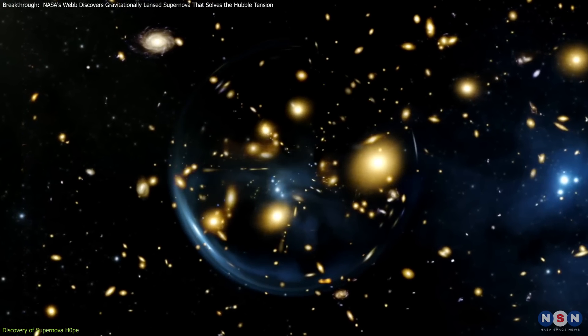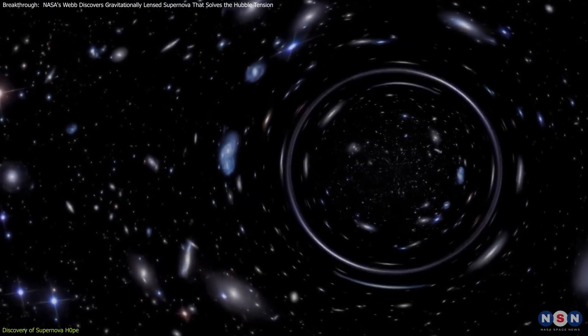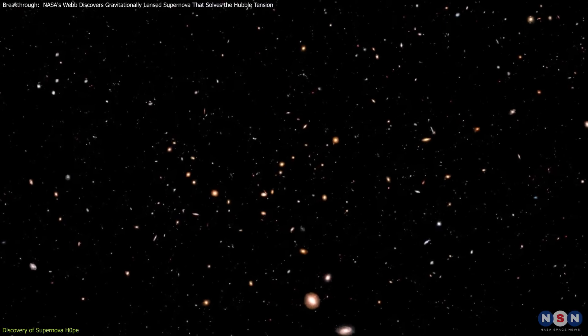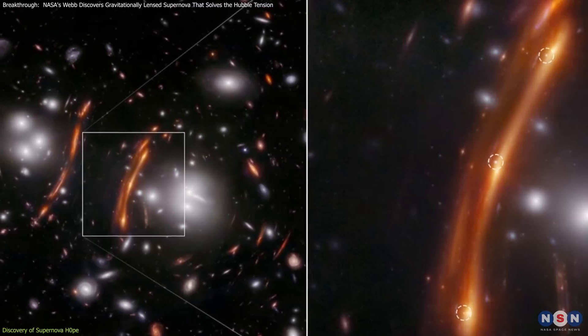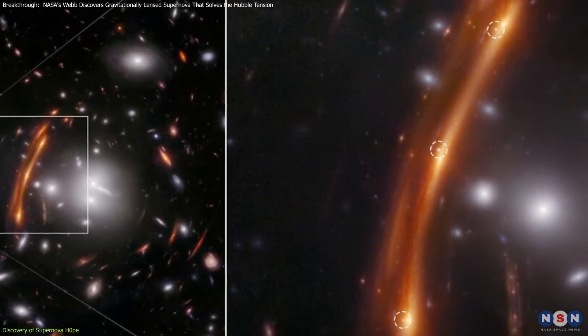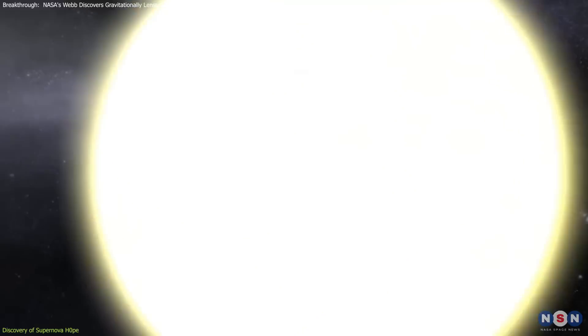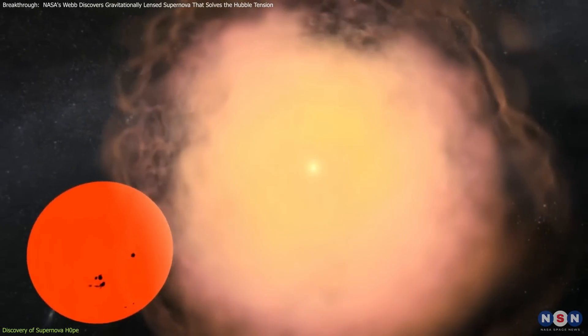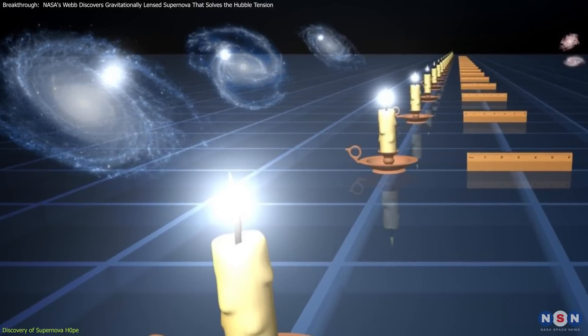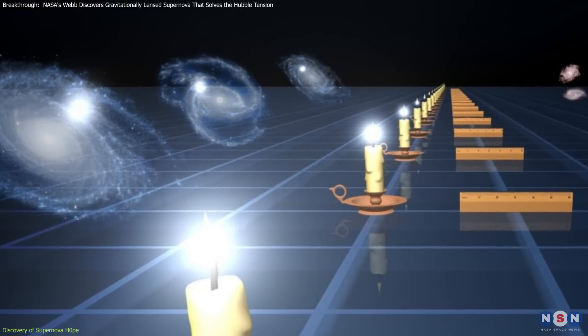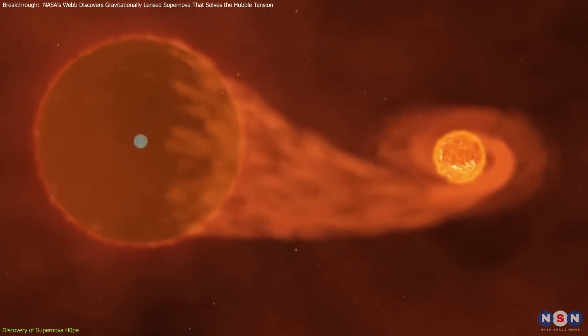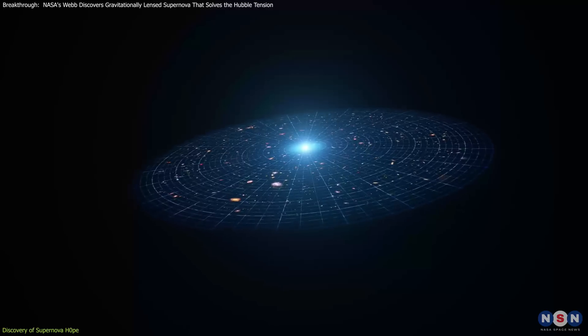This effect is incredibly useful for astronomers, because it allows them to observe objects that would otherwise be too faint or distant to study in detail. But what makes Supernova Hope even more interesting is that it's a Type 1a supernova, a type of exploding star that has a predictable brightness. This type of supernova is often referred to as standard candles, because their intrinsic brightness is so well known that astronomers can use them to measure distances across the universe. This makes them critical tools for understanding how fast the universe is expanding.